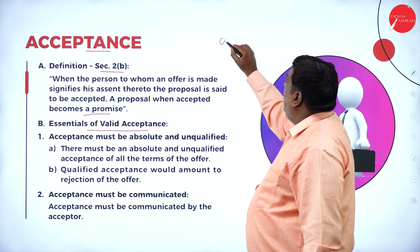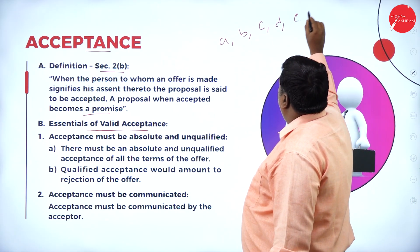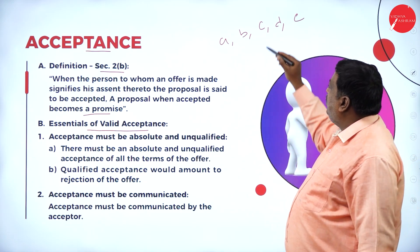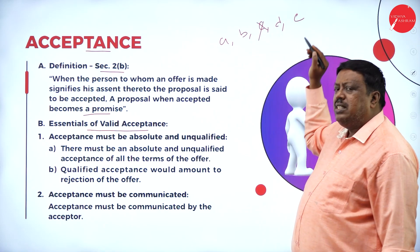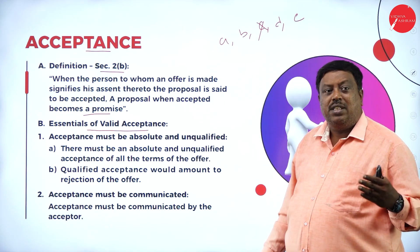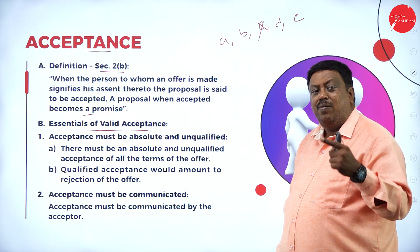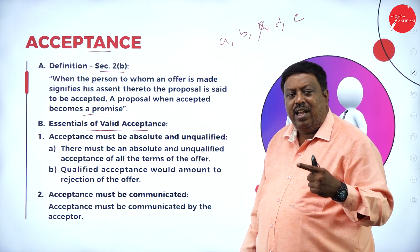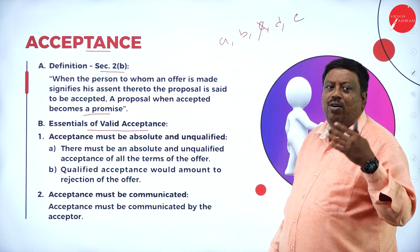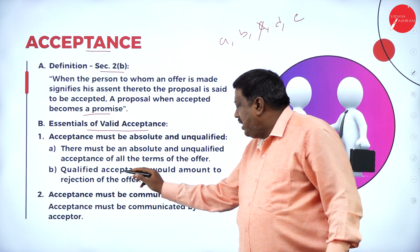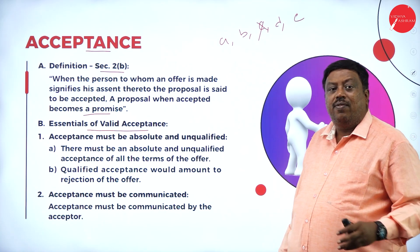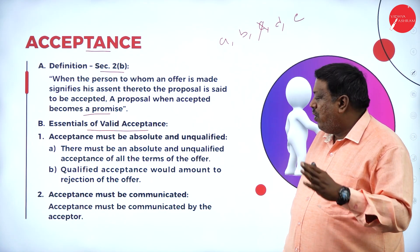If the offer has terms A, B, C, D, E, and you say you have not agreed to C but agreed to all other things, it shows that when you have not agreed to one of the terms, that term has to be modified and a new agreement has to be made between the offeror and offeree. Qualified acceptance would amount to rejection of the offer. Always it should be unqualified — it should not be a qualified concept.